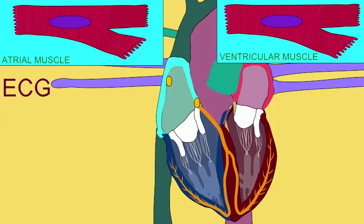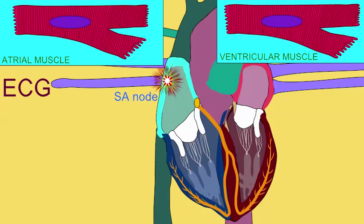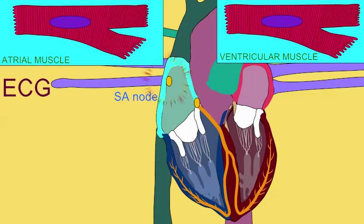When a new cardiac cycle begins, there are no electrical events. The first electrical event is the firing of the autorhythmic fibers in the SA node. This is the primary pacemaker of the heart, and its activity initiates a new cardiac cycle.